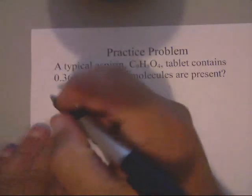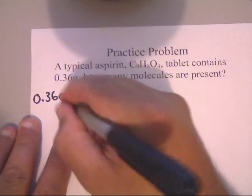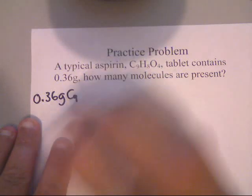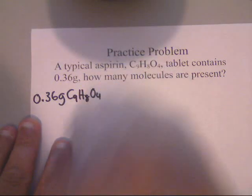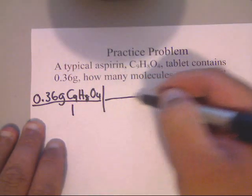So let's start this problem. We've got given to us 0.36 grams of C9H8O4. And that, lo and behold, is aspirin. And we'll put that over 1.